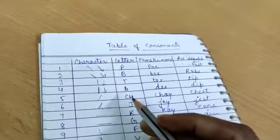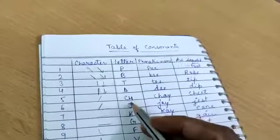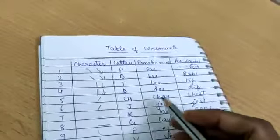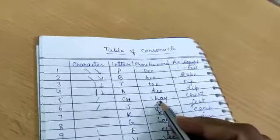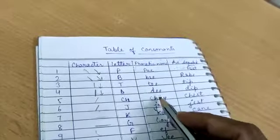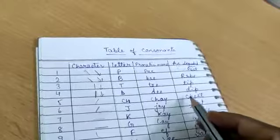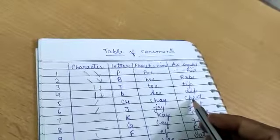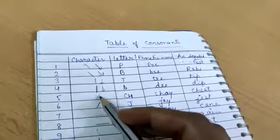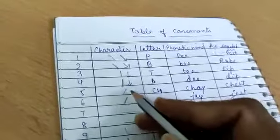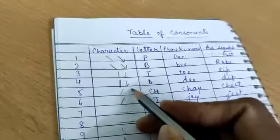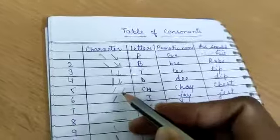The next letter is CHE. You see here CHE. Its phonetic name is CHE. As you can hear in CHEST. It is written like this. Motion is downward.